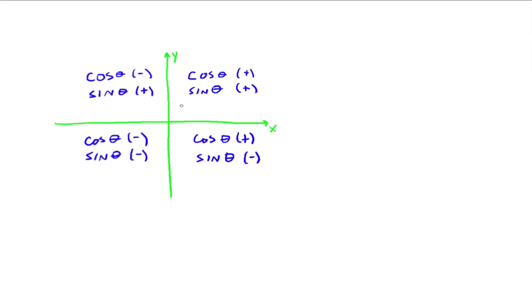When you have an angle in quadrant 1, your r value is always going to be positive — no matter where your angle is, r is always positive. Your x and y values could be positive or negative. In quadrant 1, x is positive and y is positive. Since cosine is defined as x over r, cosine is positive. And since sine is defined as y over r, sine is also positive. So for any angle between 0 and 90 degrees, both cosine and sine are positive.